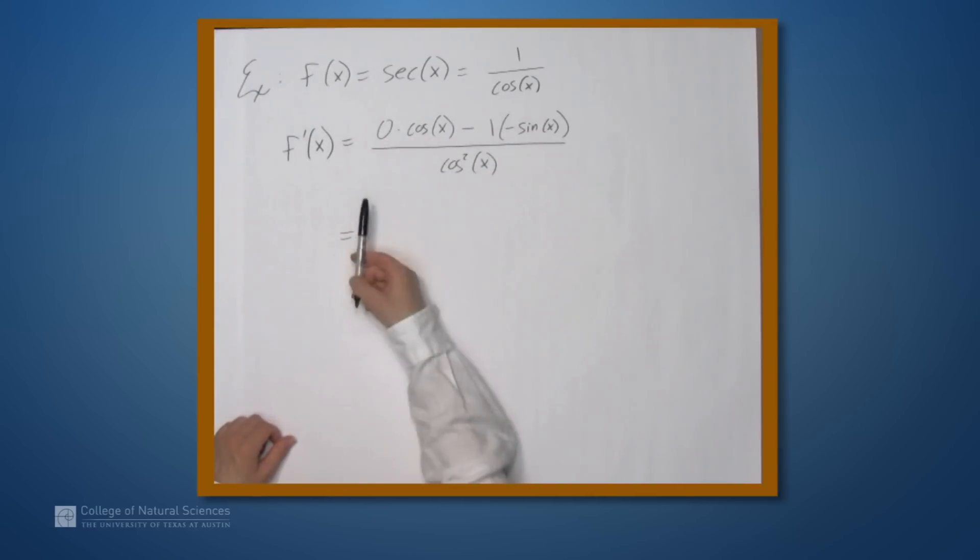Simplifying the numerator, we have 0 times cosine, that gives us 0. We have a negative times a negative, that gives us positive 1 times sine, or simply positive sine of x. And the denominator, we still have cosine squared.